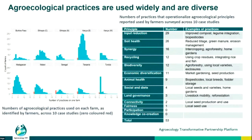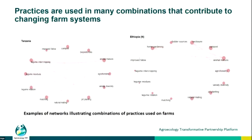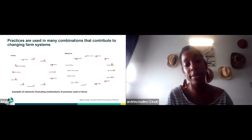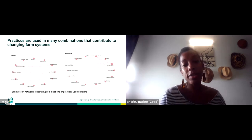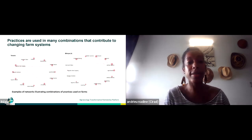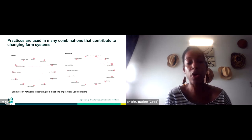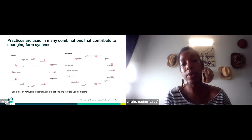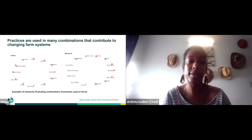An important point is that practices are used in many combinations that contribute to changing farming systems. Practices are combined at farm, household, and broader scales, and applying them generally requires a redesign of the farming system. The combinations depend on the site — for example, Tanzania had specific combinations of practices that were different from those identified in Ethiopia.